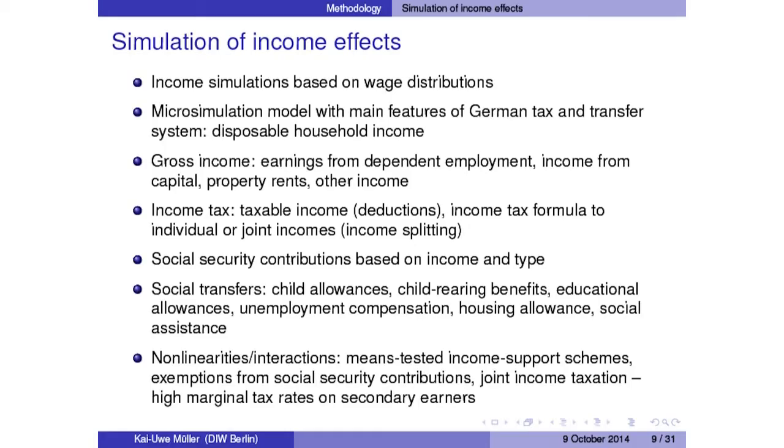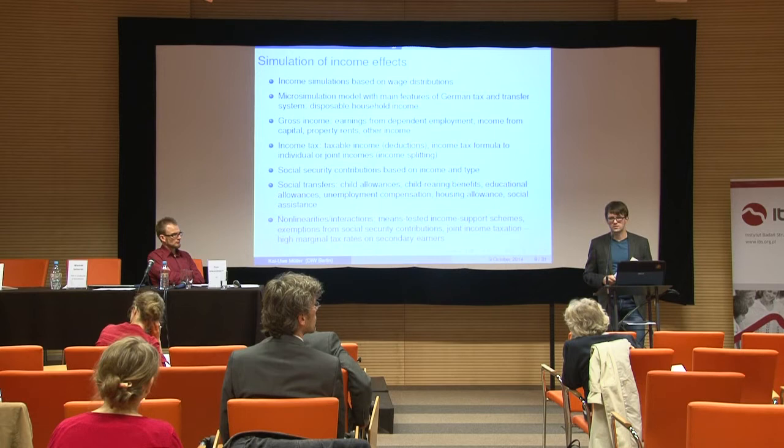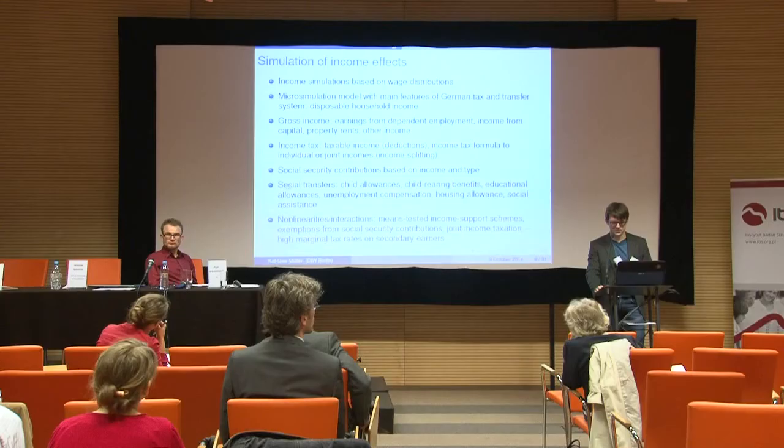The first step is simulating wage effects. In the second step, we simulate income effects using a comprehensive microsimulation model for all German households. For each individual household, based on its composition, number of wage earners, other income, and characteristics affecting taxes and transfers, we calculate the change in disposable household incomes from the nominal gain in wage incomes. This includes income tax, social security contributions, and a whole range of social transfers — reflecting important non-linearities and interactions with the minimum wage, for example through means-tested income support schemes.